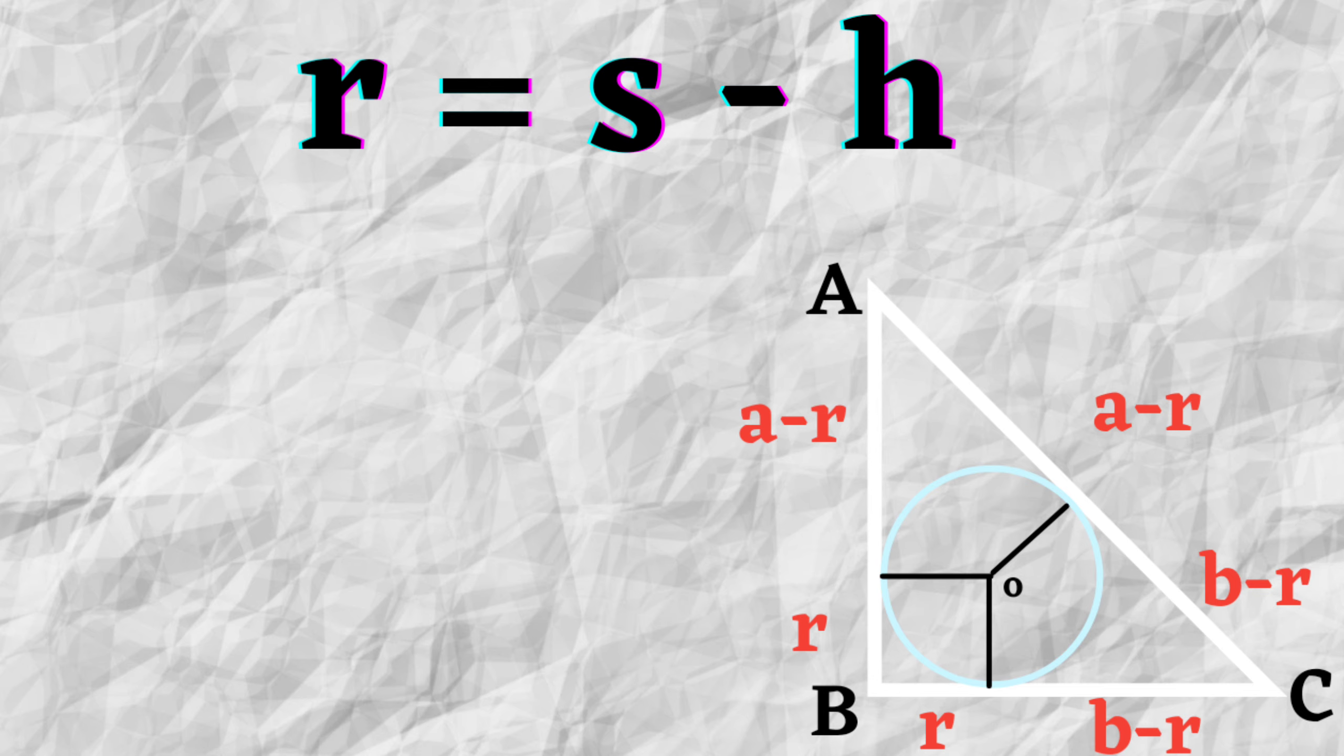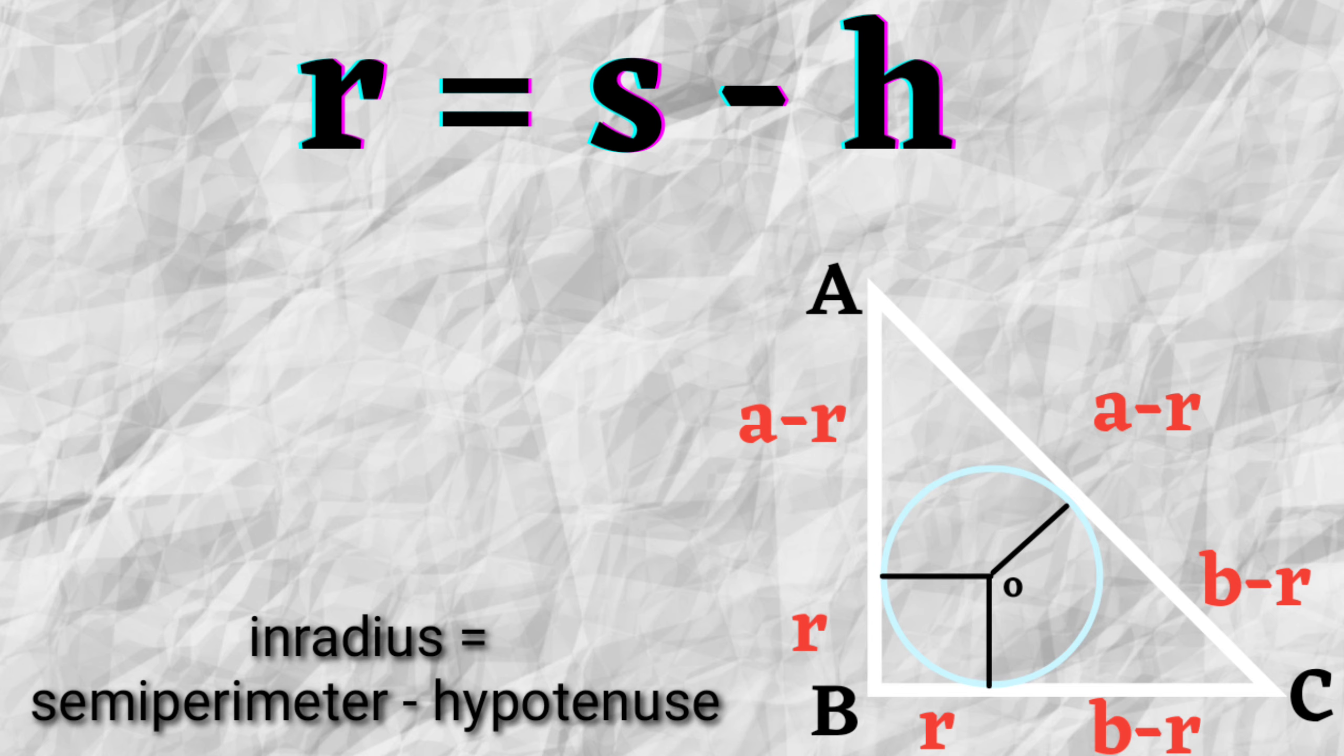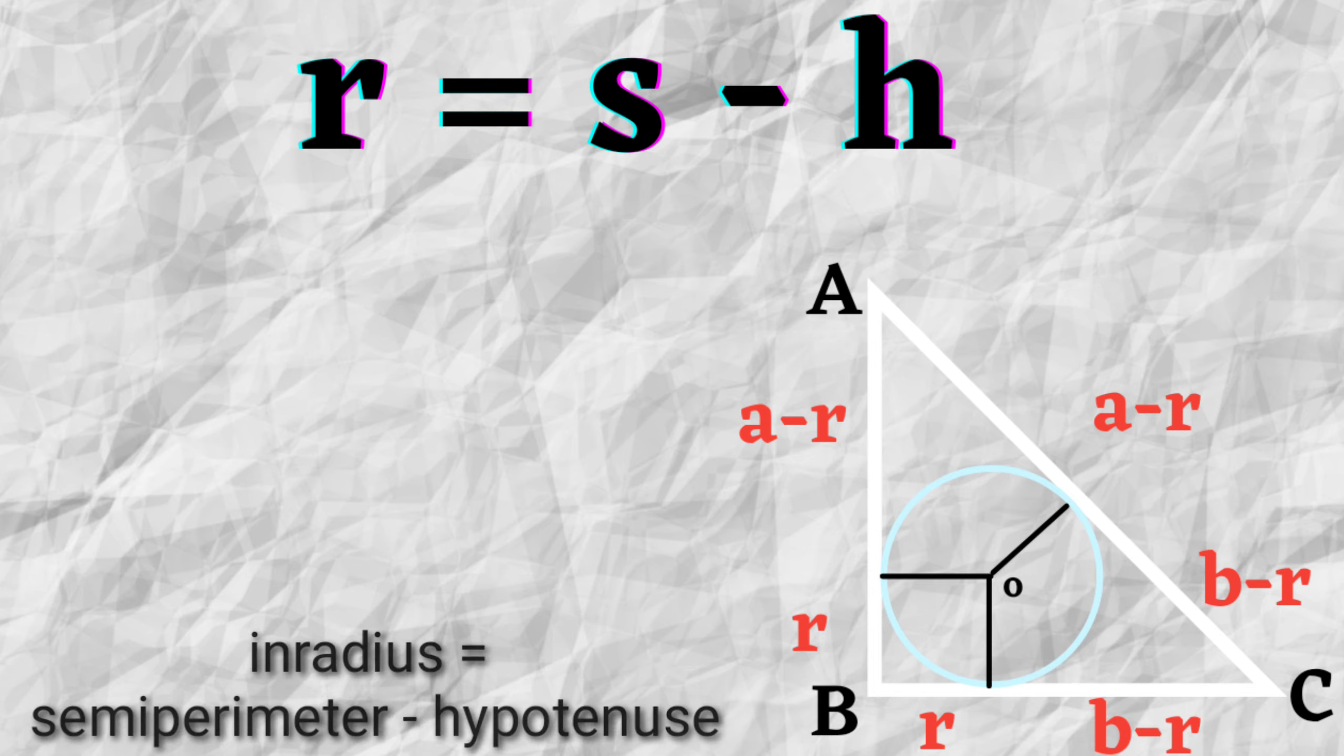As you can see from the title of this video, in this video we'll prove that for any given right-angled triangle, the inradius is equal to semiperimeter minus hypotenuse. So without further ado, let's begin with our topic.